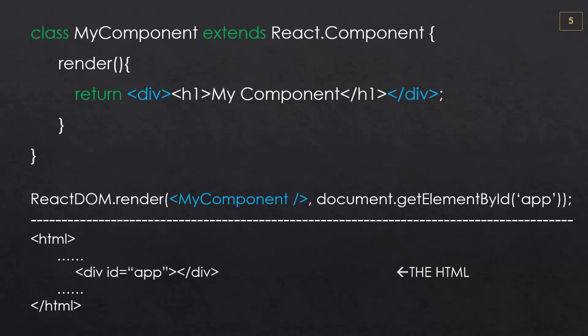So let's look at a very simple React component. We have a class called MyComponent and it's going to extend React.Component. This is a JavaScript ES2015 class, and in the class we have a render function or render method, which is a lifecycle method. When you work with React components there are certain lifecycle methods or lifecycle hooks that you can hook into at certain points of the component rendering or loading. The render method is the only one that's actually required.